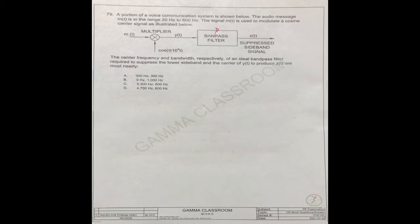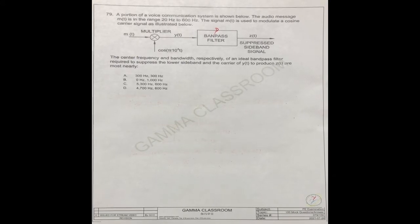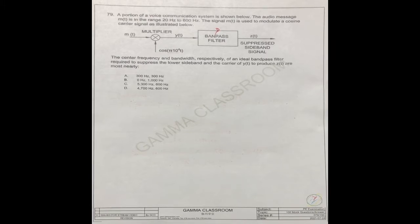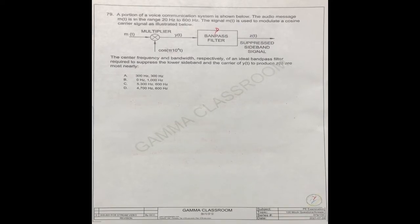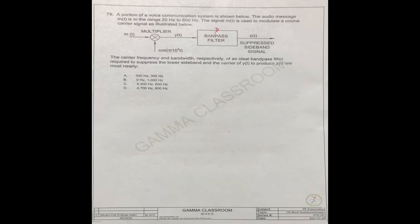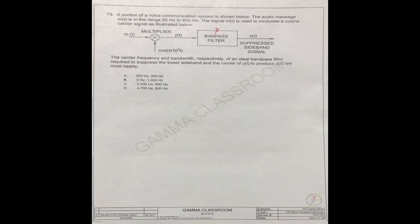A portion of a voice communication system is shown below. The audio message MT is in the range of 20Hz to 600Hz. The signal MT is used to modulate a cosine carrier signal. The center frequency and bandwidth respectively of an ideal bandpass filter are required to suppress the lower sideband and the carrier of YT to produce ZT.